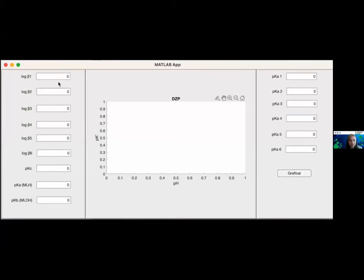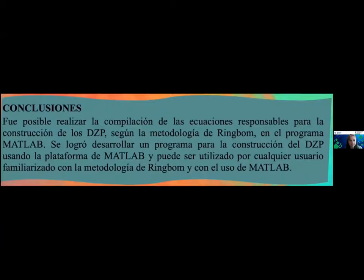Un ejemplo adicional puede ser el sistema de aluminio 3 con EDTA en medio acuoso, donde solamente colocamos un log de beta 4, un valor de PKC, el valor del complejo con ion hidróneo y el complejo con ion hidróxido. Y sin olvidar los PKs del EDTA. Una vez que obtenemos todos los datos llenos, podemos presionar graficar para ver el diagrama correspondiente.